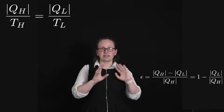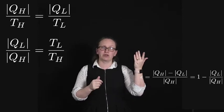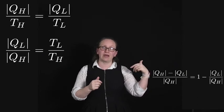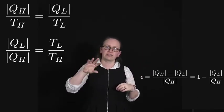So just rearranging this expression, we can write that the absolute value of QL over the absolute value of QH is equal to TL over TH.